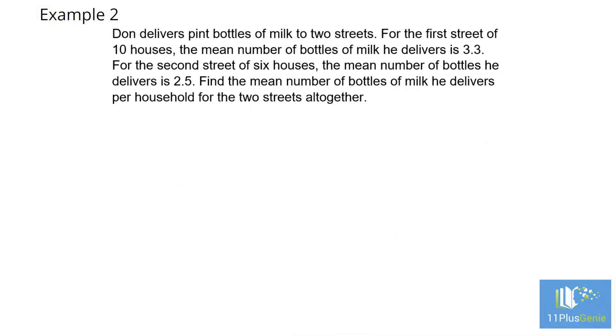Example 2. Don delivers pint bottles of milk to two streets. For the first street of 10 houses, the mean number of bottles of milk he delivers is 3.3. For the second street of 6 houses, the mean number of bottles he delivers is 2.5. Find the mean number of bottles of milk he delivers per household for the two streets altogether.